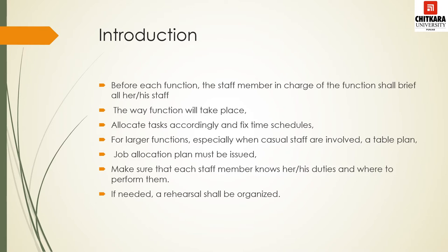Tasks are allocated accordingly and time schedules are fixed for all staff members. For larger functions, especially when casual staff are involved, a table plan is discussed and who would be working where. A job allocation plan must be issued to all staff members as well as to casual staff. Each staff member must know his or her duties and where to perform them. If needed, a rehearsal time shall be organized, which is very important.